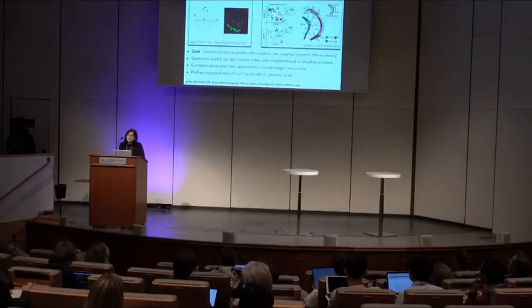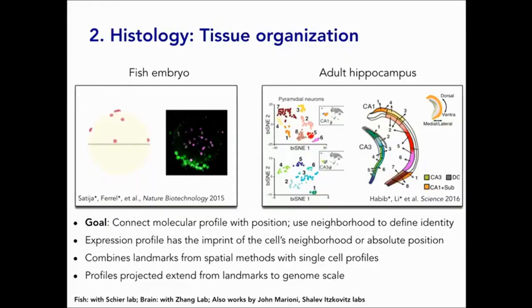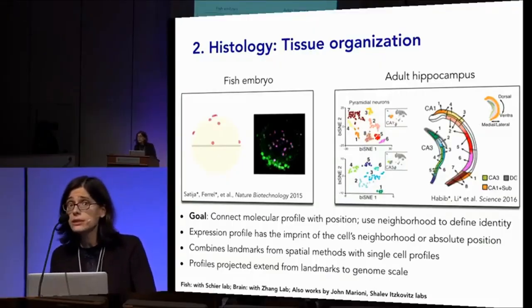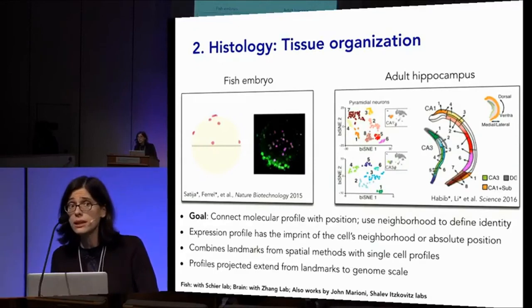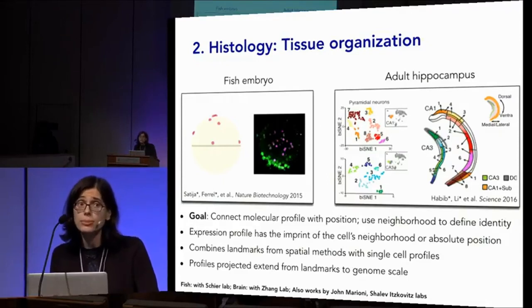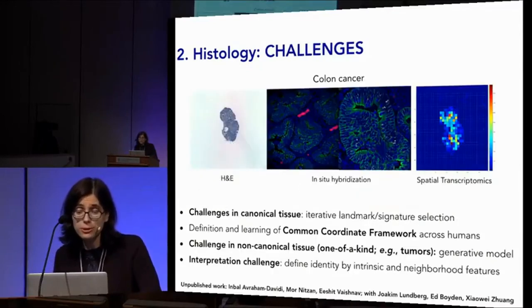Moving to the next layer, we can think about where cells actually are — not just their types — in the context of histology. Expression profiles, the molecules that cells use, actually carry the imprint of the local neighborhood of the cell, as well as more global coordinates including anatomic position. This is also a remarkable technical opportunity at the sweet spot of combining two technologies: the ability to profile dissociated cells and the ability to measure signatures of molecules in situ. By taking both together, we can map cellular profiles into their spatial position.